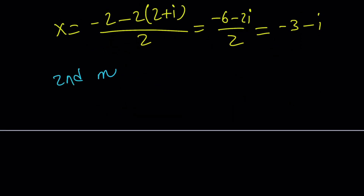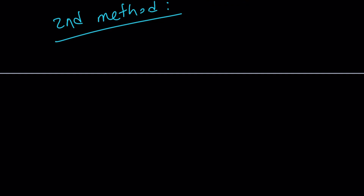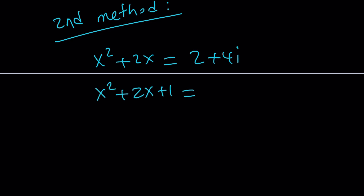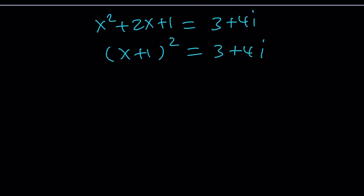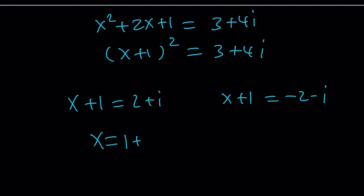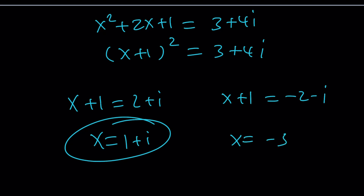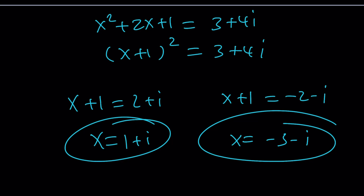The second method uses completing the square, which also underlies the quadratic formula. Starting from x squared plus 2x equals 2 plus 4i, add 1 to both sides to get x plus 1 squared equals 3 plus 4i. Taking the square root gives x plus 1 equals 2 plus i or x plus 1 equals negative 2 minus i, so x equals 1 plus i or x equals negative 3 minus i — the same solutions. You can go ahead and plug them in to verify.